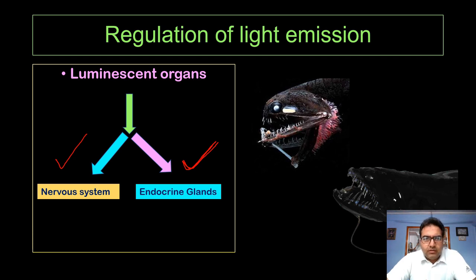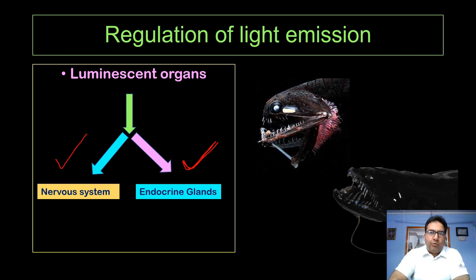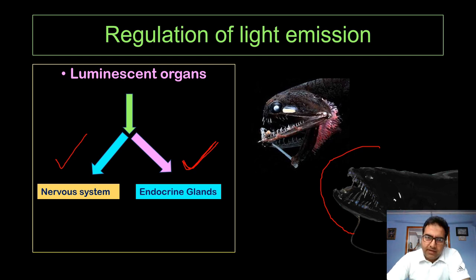Mechanical regulation of emission can be brought about by rotating the luminescent organ or by concealing the aperture by pulling over a pigmented sheath. Photostomias rotates the bioluminescent organs downward by contraction of muscles to conceal the bright surface. Idiacanthus pulls down a pigmented sheet in front of the light-producing surface. In both ways they regulate their bioluminescent organs.